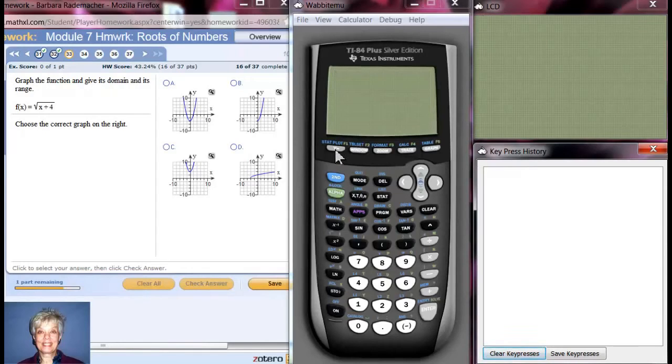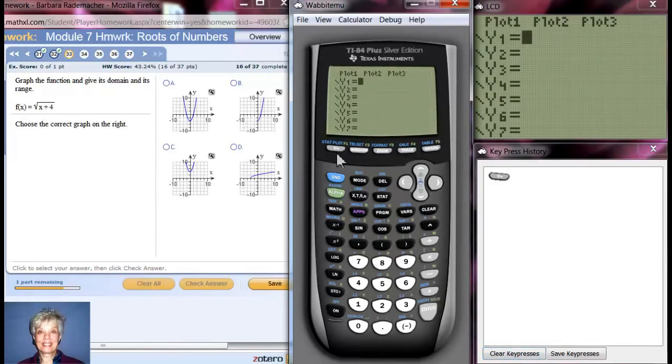So let's do it. Come to the y equals button right here and if you have anything written in here just clear them all by using your up and down arrows.